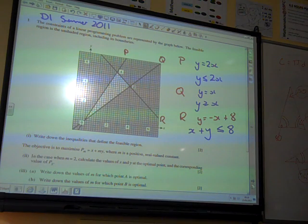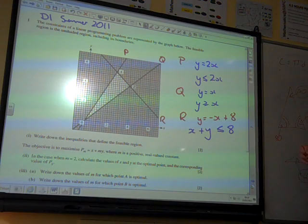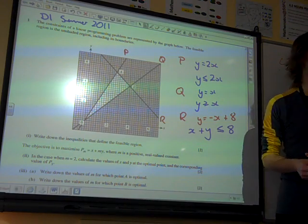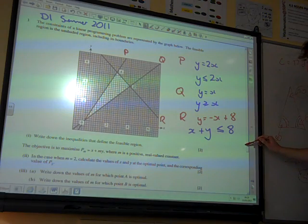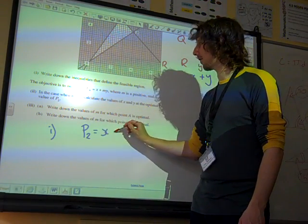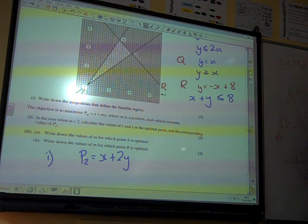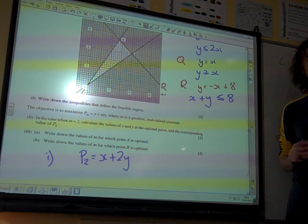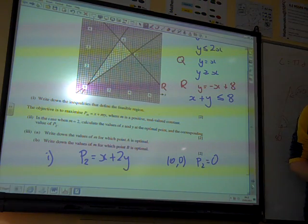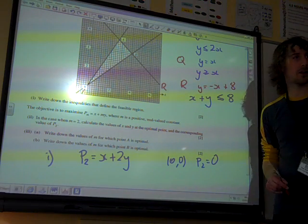Now, the objective is to maximize P equals x plus ny, where n is a positive real valued constant. In the case when n is 2, calculate the values of x and y at the optimal point, and the corresponding value of P2. So we're given that n equals 2. Our function we're trying to maximize is x plus 2y. We have three points on our graph - the origin, A, and B. The origin we don't need to worry about, because the objective function is 0. So we can ignore the origin.